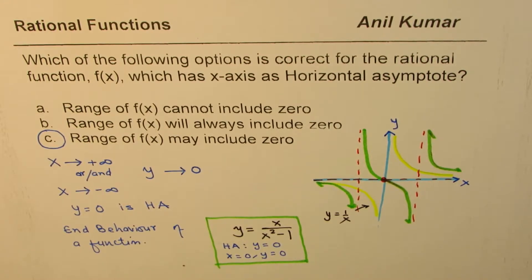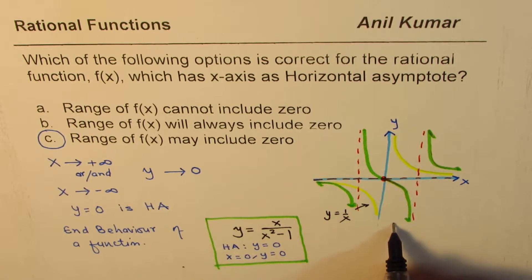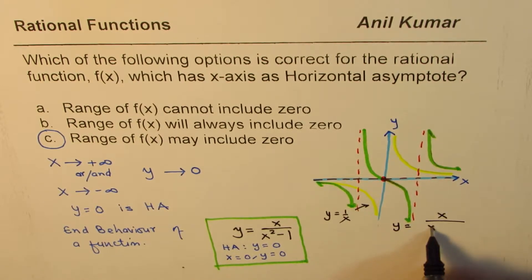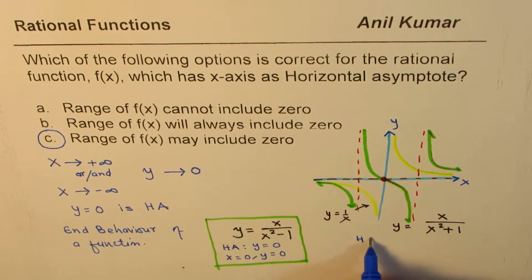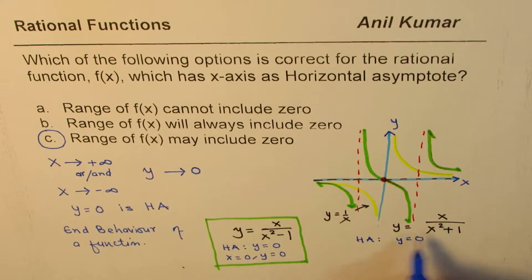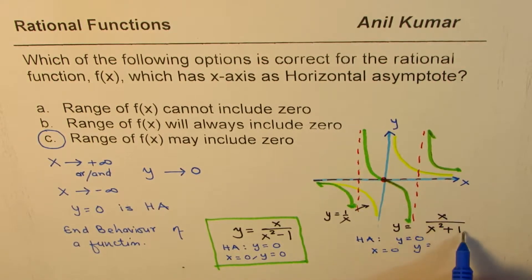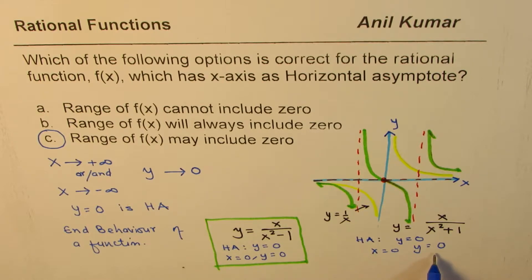Let me give you one more example: y equals x over x squared plus 1. From the equation it is clear that we have a horizontal asymptote y equals zero. And when x equals zero, y equals zero over one, which is zero — so in this case also the range includes zero, the origin. The graph of the function crosses the x-axis.